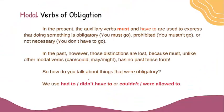Modal verbs of obligation. In the present, the auxiliary verbs 'must' and 'have to' are used to express that doing something is obligatory — 'you must go' — prohibited — 'you mustn't go' — or not necessary: 'you don't have to go.'